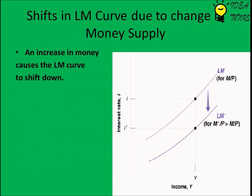Shifts in the LM curve occur due to a change in money supply.